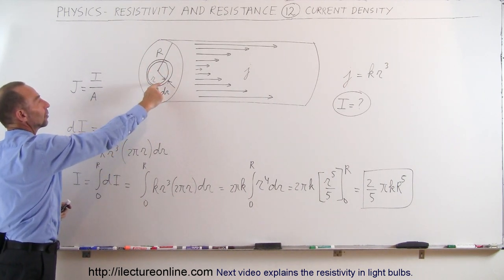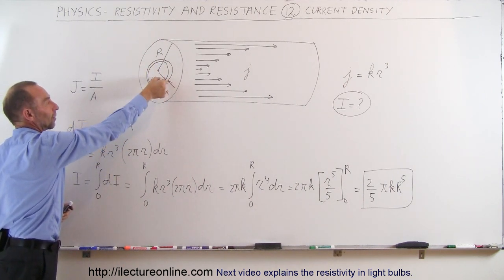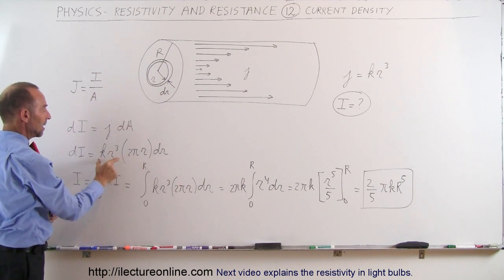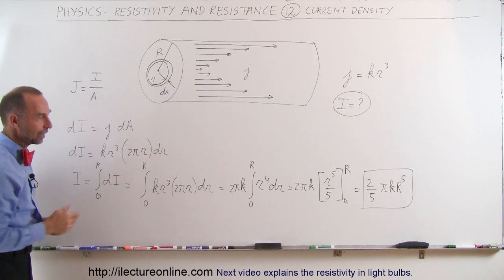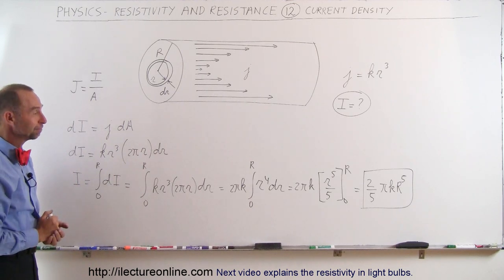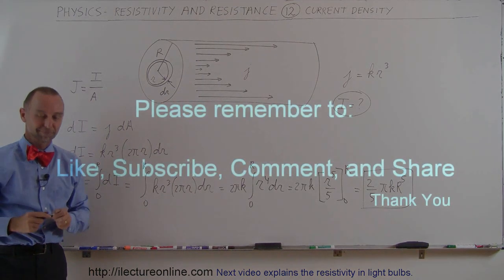The surface area of each ringlet, dA is equal to two pi R, the circumference times the thickness, that's the dA. And the current density as a function of R is KR cubed. And then we integrate, and that's how we do that. Thank you.